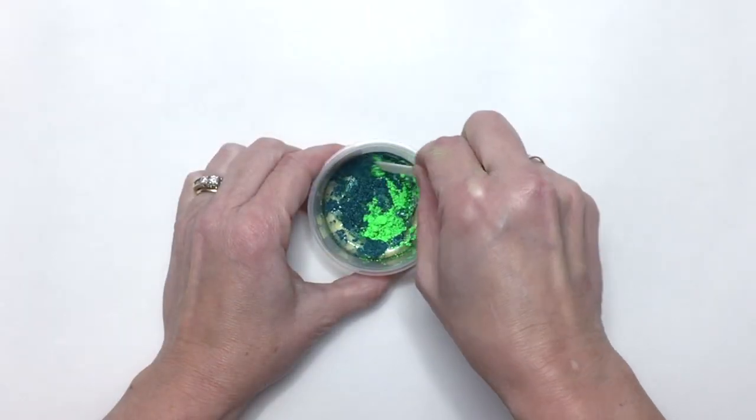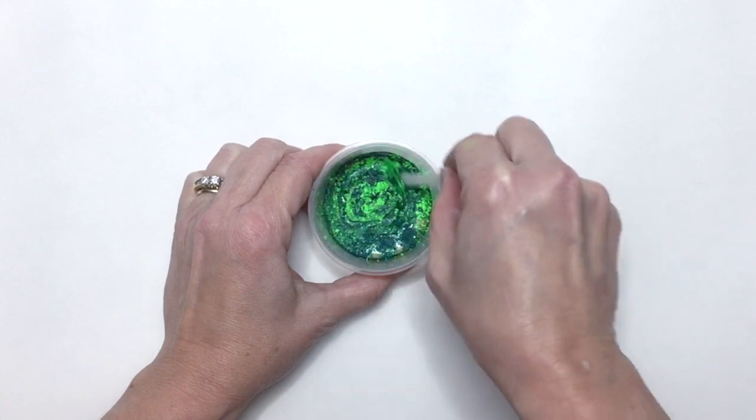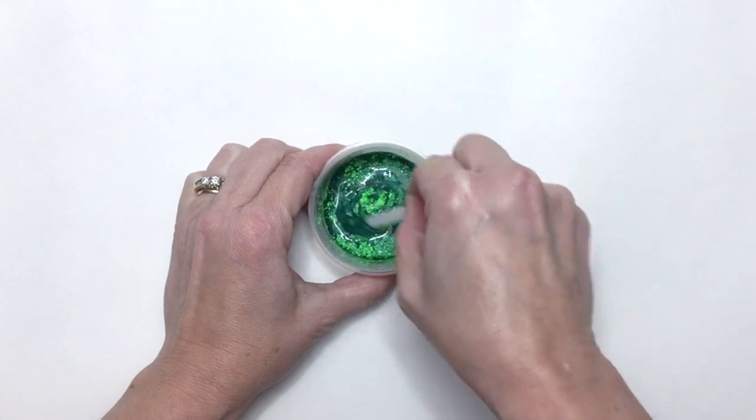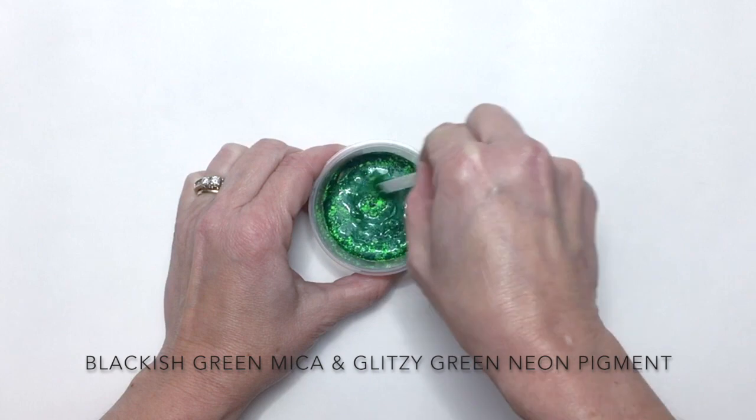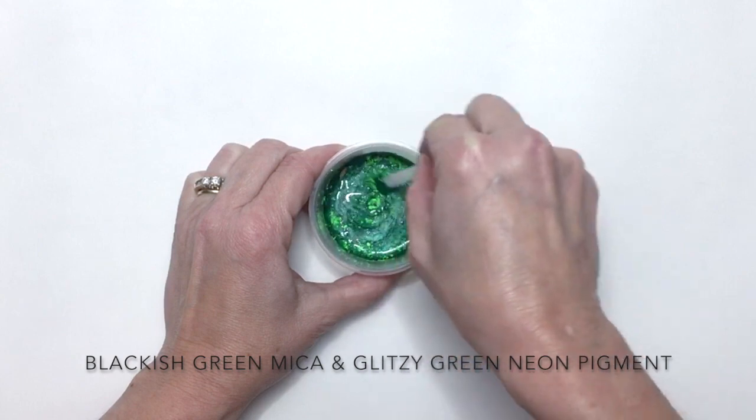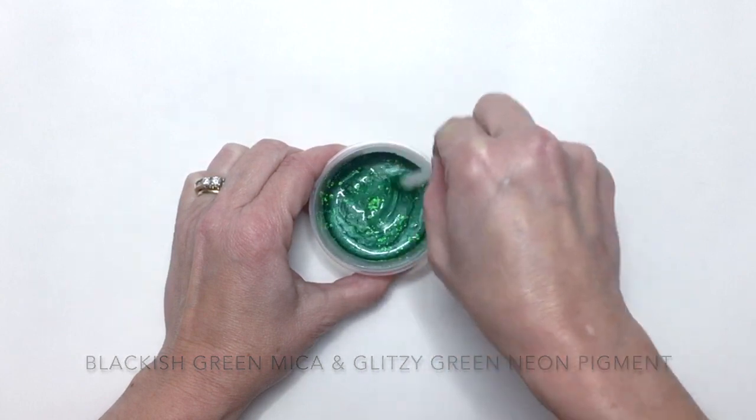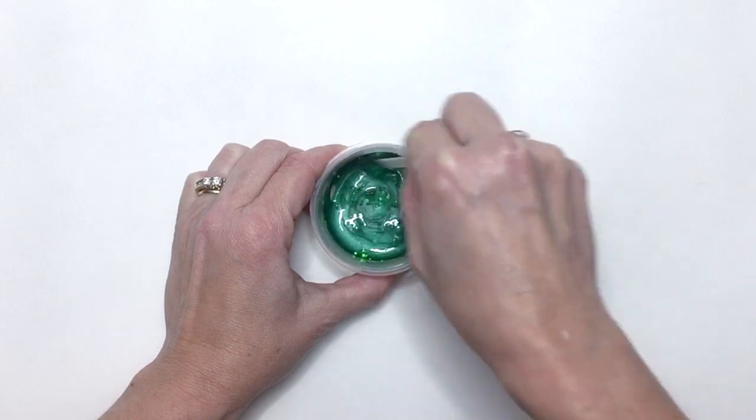Hi soapy friends, it's Steph from Micas and More. I'm mixing up a custom blend to get a great emerald green color. I'm using blackish green mica and glitzy green neon in a 2 to 1 ratio with more mica than neon. Let's make soap.